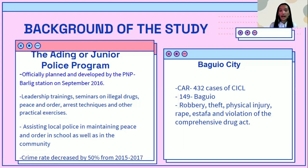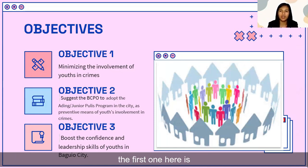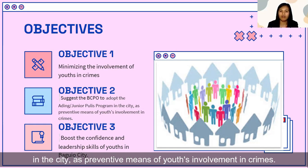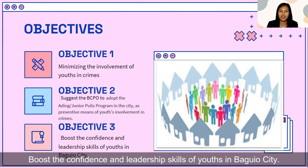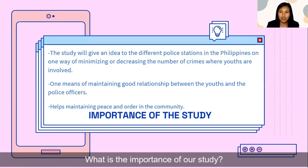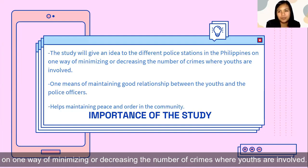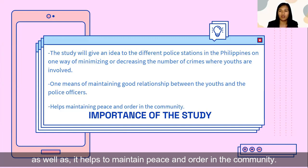In our study, we have three objectives. The first is minimizing the involvement of youths in crimes. Objective 2 is to suggest the BCPO to adopt the Junior Police Program in the city as a preventive means of youth involvement in crimes. Objective 3 is to boost the confidence and leadership skills of youths in Baguio City. The study will give an idea to different police stations in the Philippines on ways of minimizing crimes where youths are involved, and one means of maintaining good relationship between the youths and police officers, as well as maintaining peace and order in the community.